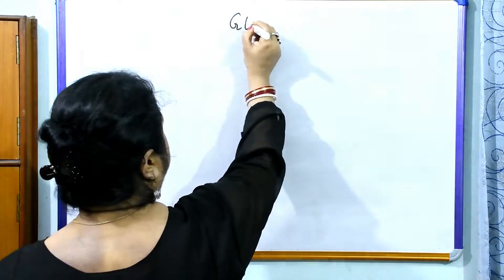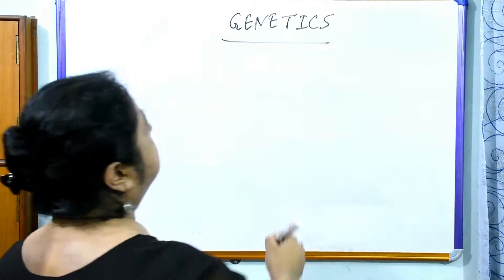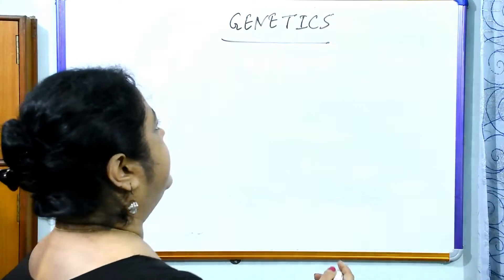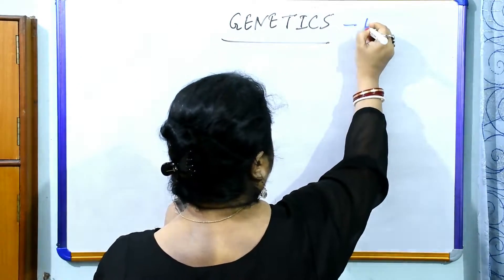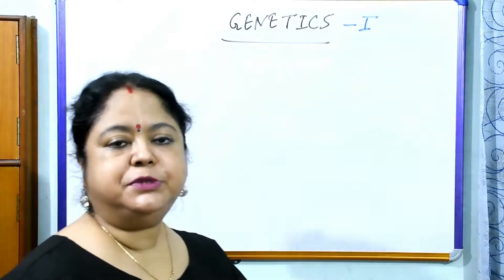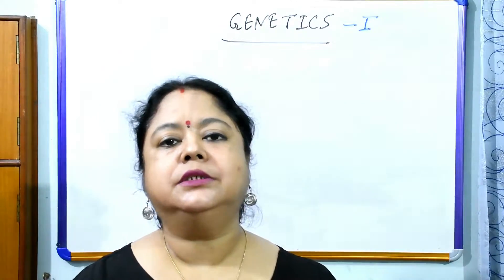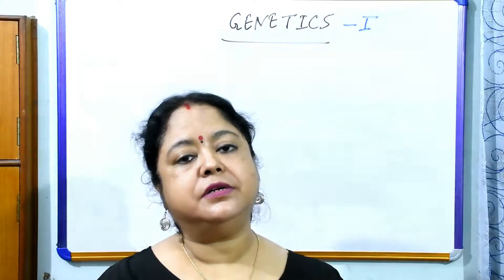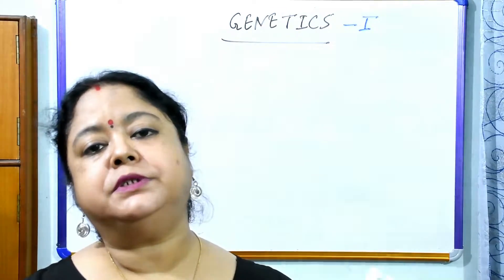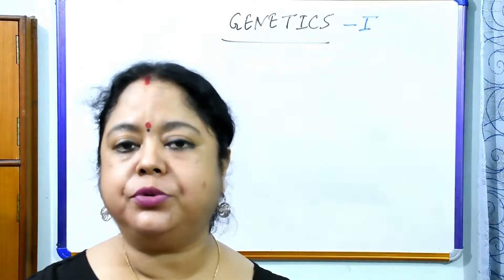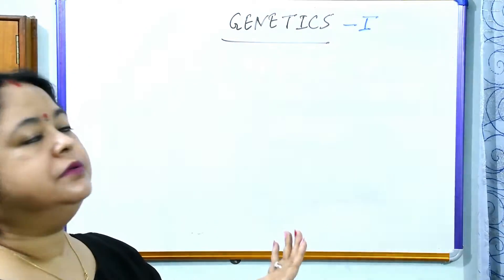This is the genetics number one video because genetics is a very long topic — we can't complete it in a single video. Rather, we have to make a series of videos, and I think you will get interest and follow all the videos successively. This subject deals with the inheritance of characteristics from one generation to other, as well as variations. After genetics, ultimately we have to go to evolution, so genetics serves in evolution.